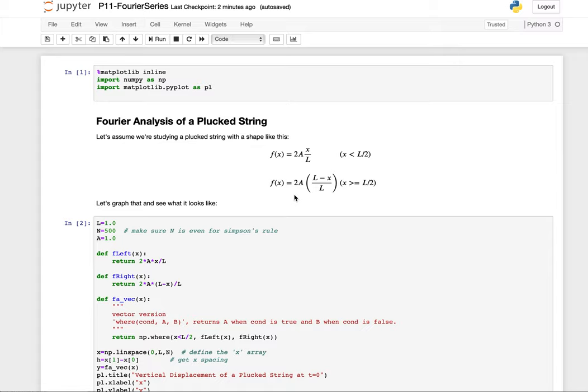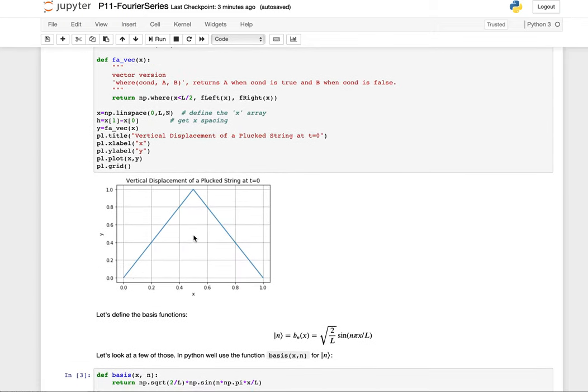So here's the setup. Suppose we have a plucked string, so that's a string where you pluck it in the middle and let go. This is similar, if you'll think back to the problem on coupled oscillators, to the situation where we set the masses up in a particular displacement and then release them, and they would oscillate in some complicated way.